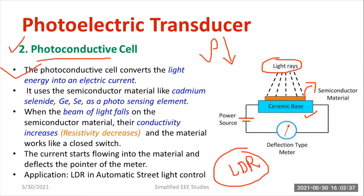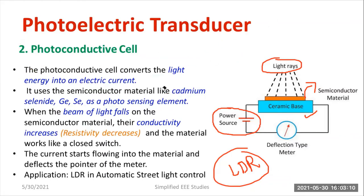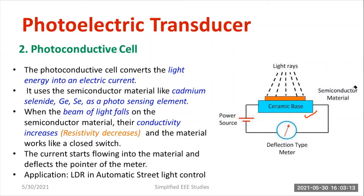The photoconductive cells convert light into electric current. It is normally made up of calcium, selenite, germanium, and silicon with a suitable photosensitive element. Whenever light falls over it, changes in conductivity take place. One of the applications is the LDR — light-dependent resistor — used in LDR-based street lights. LDR is a typical example of photoconductive material.